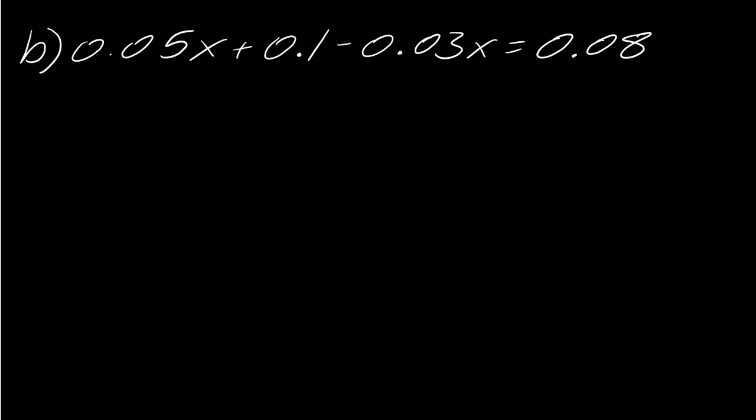So 0.05x plus 0.1 minus 0.03x equals 0.08. What is the maximum number of decimal spots? So once again, it's two. So then maybe you want to pause the video for a second and move all the decimal spots over two to the right and then hit play when you're ready.